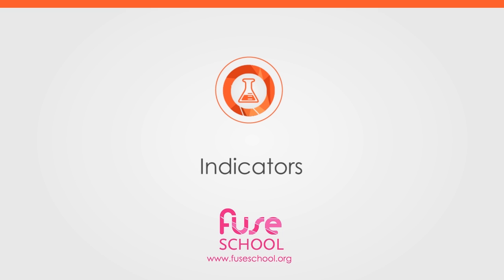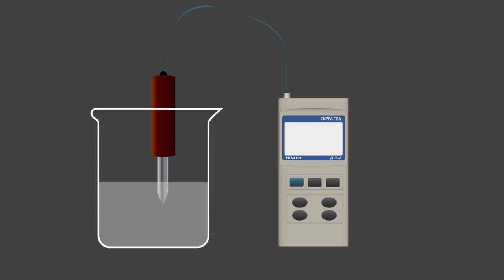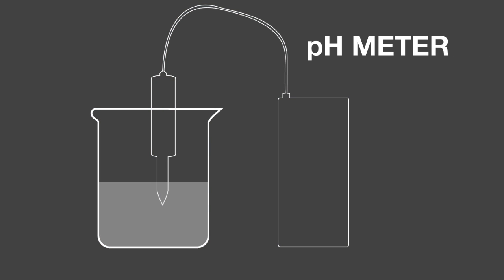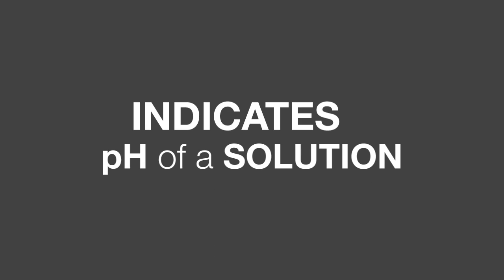While it is possible to quantitatively measure the pH of a solution using a device known as a pH meter, there are also ways to determine pH qualitatively. In this lesson, we will learn about indicators, which help us indicate the pH of a solution.